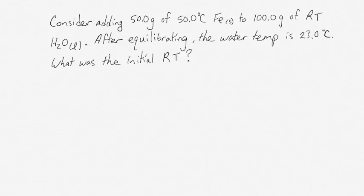We're taking hot metal iron and dumping it into room temperature liquid water. After we wait for these temperatures to equilibrate, the water temperature is 23 degrees Celsius. We want to know what was the initial room temperature.